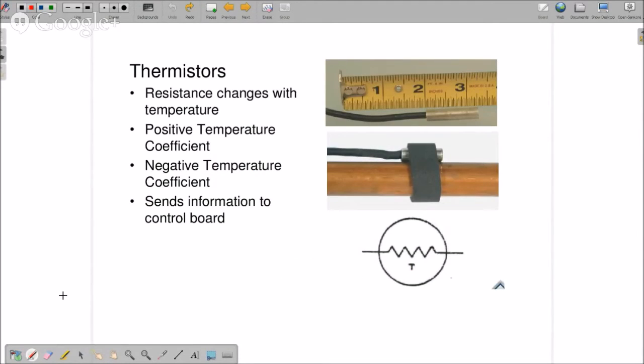Thermistors - we're going to see these more and more with equipment that is of higher efficiency and more complex. These are small devices that change resistance with temperature. They're connected to control boards, and the control board microprocessor is going to make something happen based on the resistance of this thermistor.